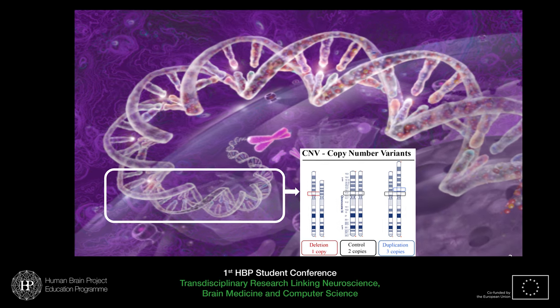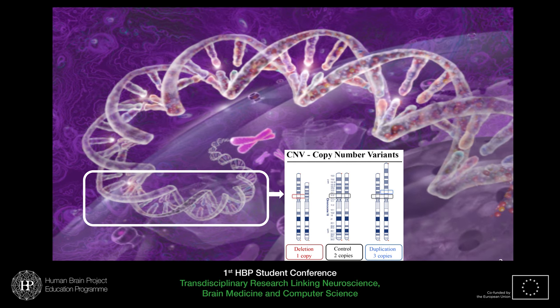With one, two, or three copies, we can do a sort of linear regression to analyze the effect of the different number of genomic copies on some phenotypic anatomy. On chromosome 16, some of these mutations are associated with disorders, and in particular at the 16p11.2 locus, there is a particular CNV that is associated with autism and neurodevelopmental disorders.